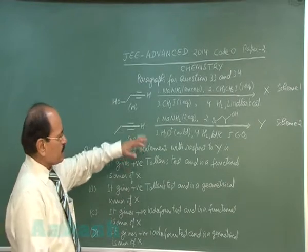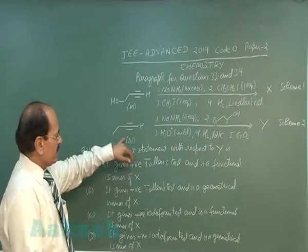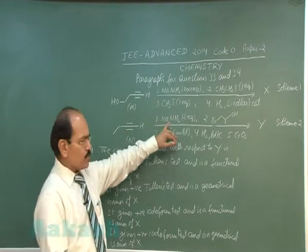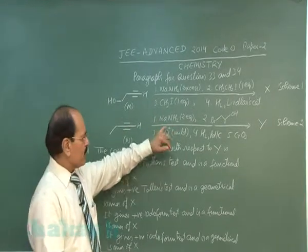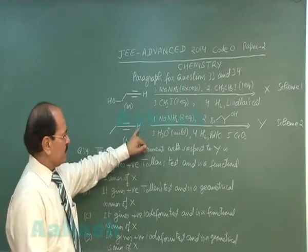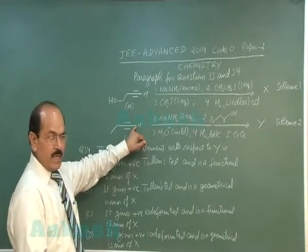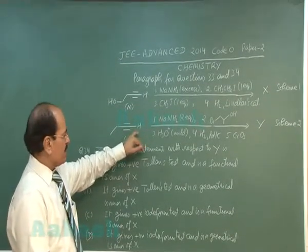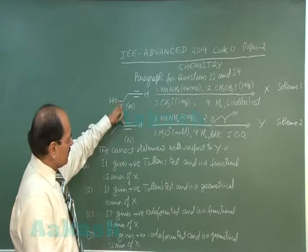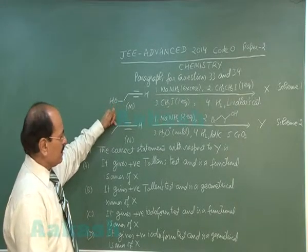This question pertains to Scheme 2. The alkyne N, when treated with sodamide, removes the acidic hydrogen — the hydrogen attached to the sp-hybridized carbon as well as the hydrogen attached to the adjacent carbon atom to the sp-hybridized carbon.